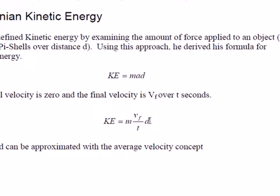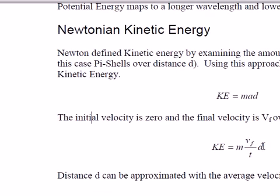And then what Newton did — and this is key to understanding all of the Newtonian formulas — if you ever look at Newtonian theory, there's almost no integration in it, and yet it works. The reason why it works is he got around using integration by using what's called the average velocity. He knew that the final velocity divided by time was equal to the acceleration.